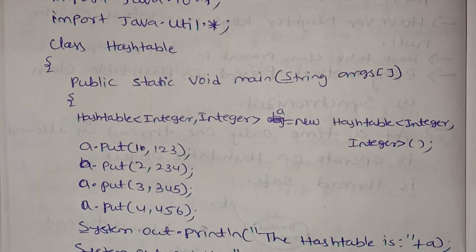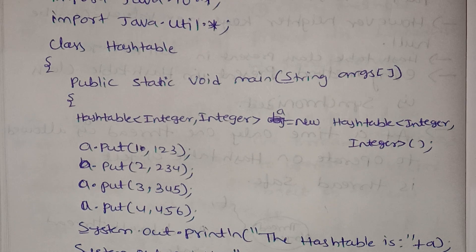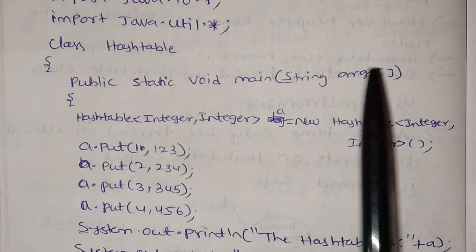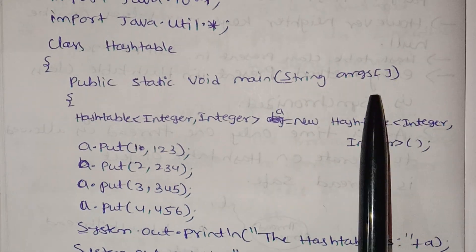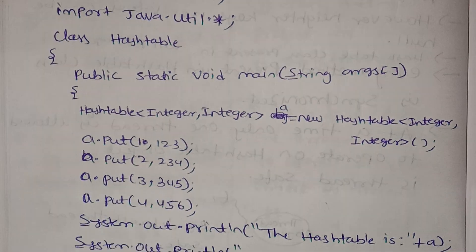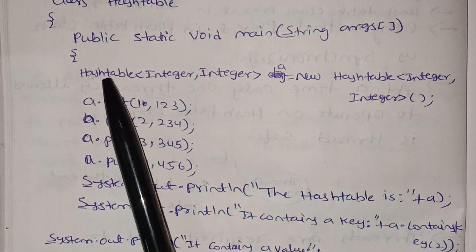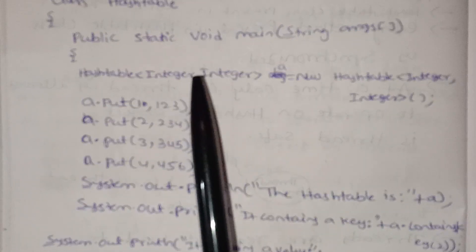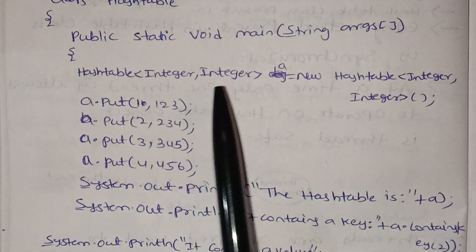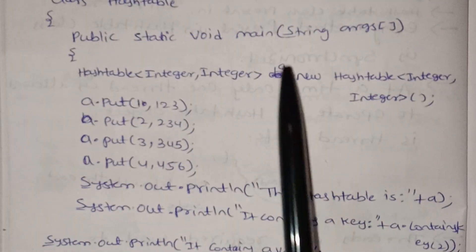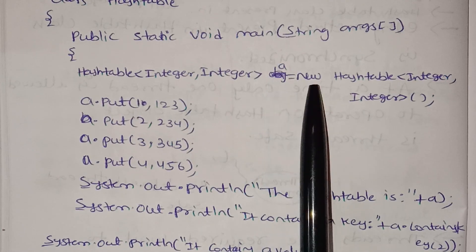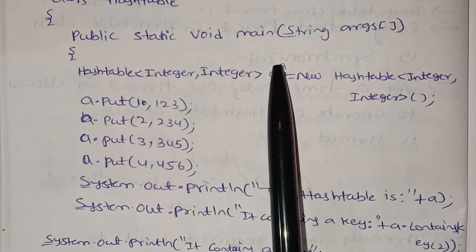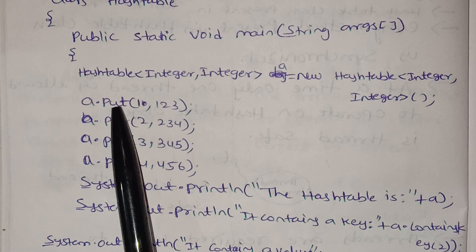We can enter the string array of arguments. We declare a Hashtable with Integer, Integer type parameters. We can give each key an integer value. This is the object. If we call new, memory for the object is allocated. We can initialize this object.